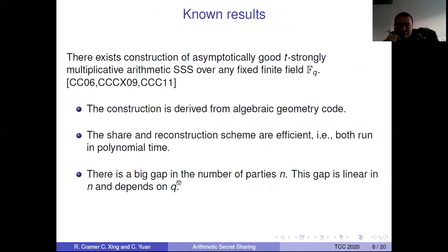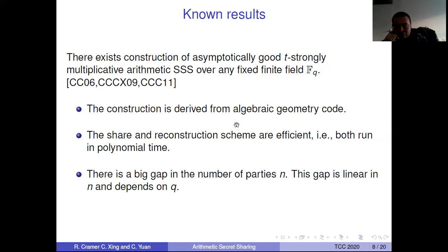There are now some known results: there exist constructions of asymptotically good T-strongly multiplicative arithmetic secret sharing schemes over any fixed finite field. This construction is derived from algebraic geometry codes; it's not very elementary, so you have to know a lot about algebraic geometry codes to construct this scheme. The sharing and reconstruction schemes are efficient — they both run in polynomial time — but it's not linear time; it's at least quadratic time, due to the encoding and decoding algorithms of algebraic geometry codes.